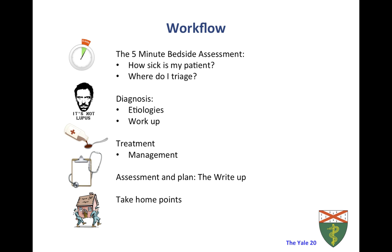As with all Yale 20 videos, we will be breaking the topic down. Starting with a five-minute assessment of the patient intended to quickly answer the question of how sick the patient is and what level of care they will need. Next, we will go through how to evaluate and work up GI bleeds. Because an upper GI bleed is often very distinct from middle and lower GI bleed in presentation and management, the first section will focus on identifying where in the GI tract the bleed is coming from. Then we will discuss the management of the problem, focusing first on upper GI bleeds and then on middle and lower. And finally, we will discuss writing an assessment and plan as well as take-home points.